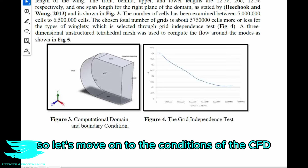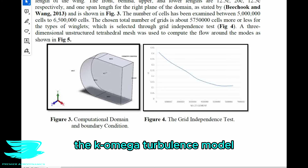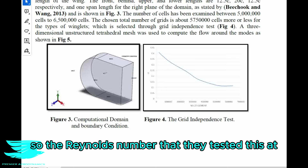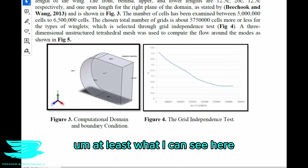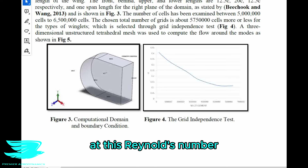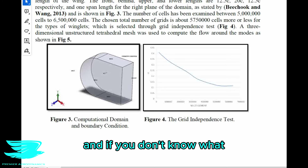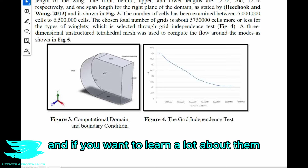Moving on to the conditions of the CFD simulations: they used the K-omega turbulence model, which I personally would not have gone with at this Reynolds number. The Reynolds number they tested at was 372,000. While they don't say what the turbulence intensity level was in the wind tunnel, at this Reynolds number there is likely going to be a laminar separation bubble on the suction surface of the wing. If you don't know what a laminar separation bubble — also known as an LSB — is, we have done a few podcasts on them.